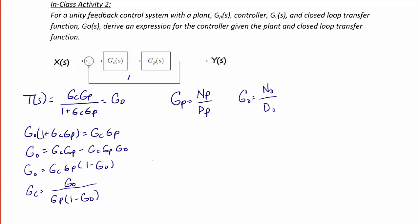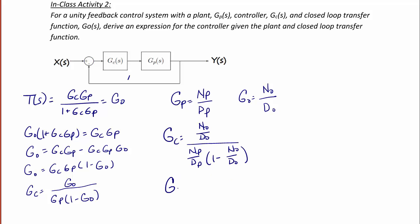We get Gc is equal to N0 over D0, divided by Np over Dp, times (1 minus N0 over D0). And finally, simplifying this expression to get rid of the complex fractions,